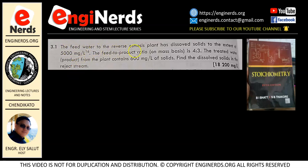The feed water to the reverse osmosis plant has dissolved solids to the extent of 5,000 mg per liter. The feed to product ratio on a mass basis is 4 by 3. The treated water or the product from the plant contains 600 mg per liter of solids. Find the dissolved solids in the rejected stream.